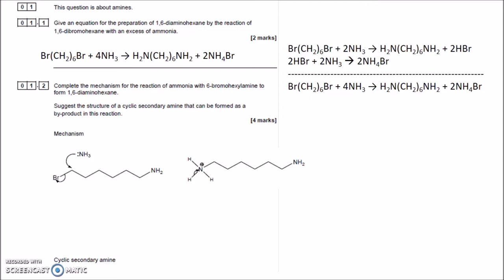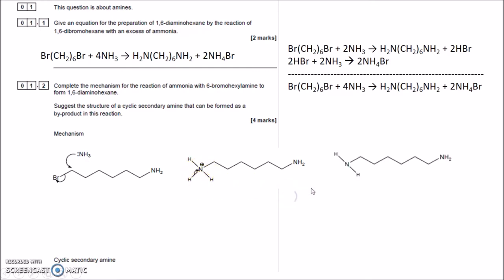The NH₃ has replaced the Br on that carbon. The carbon's still there, and where the Br was there's now a plus charge on the NH₃ group. Then the H breaks off to leave NH₂ — the plus disappears because electrons have moved onto it — making H⁺ and NH₂ at either end. That's your mechanism.